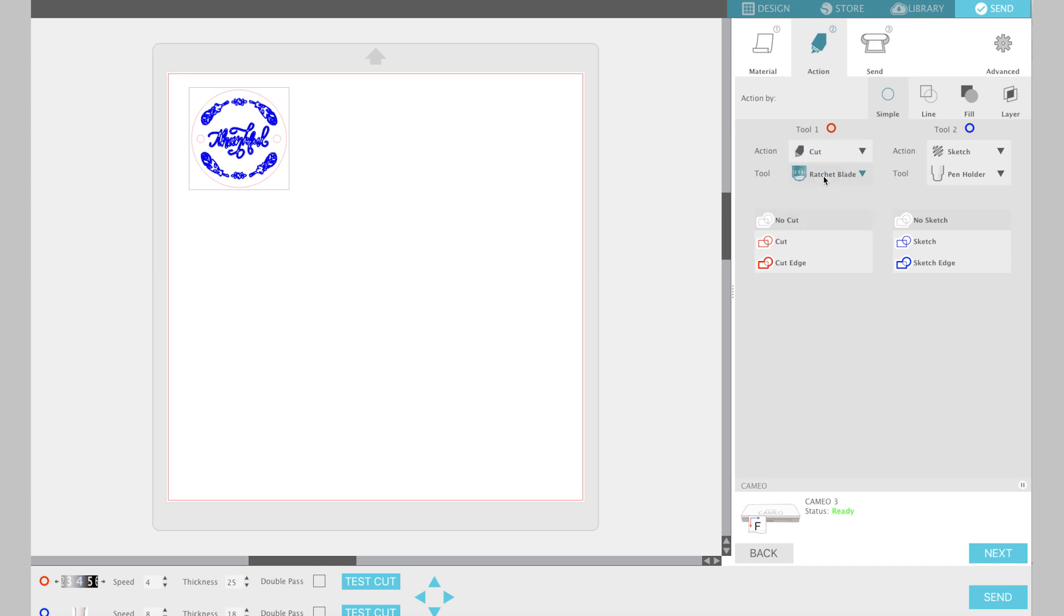Now for the cut, I'm going to go to tool one, select the blade I'm using. I'm using a ratchet blade and select cut. Then you can adjust your cut settings.